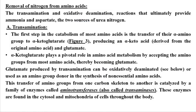Now, after discussing metabolism, we turn to removal of nitrogen from amino acids. Transamination and oxidative deamination reactions ultimately provide ammonia and aspartate — the two sources of nitrogen for urea synthesis. Nitrogen enters the body as food protein and is secreted through urine as urea and ammonia. The first step to eliminate nitrogen from amino acids is transamination.